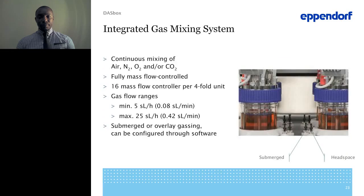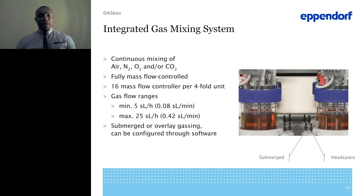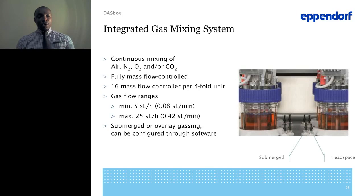The integrated gas mixing system is used to maintain your DO set point or CO2 stripping. It comes with continuous mixing of air, nitrogen, oxygen, and CO2, and is fully mass flow controlled. You have a total of 16 mass flow controllers for a full unit. The gas range is from 5 standard liters per hour to a maximum of 25 standard liters per hour. You have the option for either a submerged sparger or an overlay gas configuration.